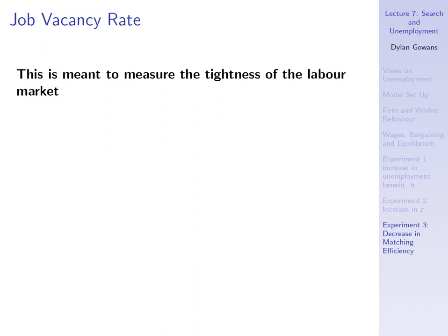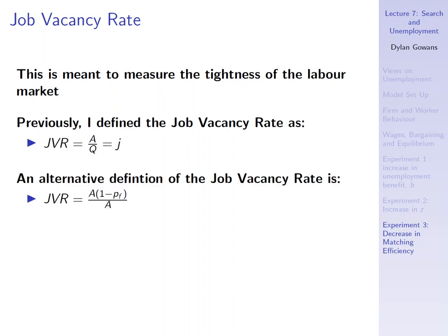And to do this, I'm just going to do a quick aside here and talk about the job vacancy rate. The job vacancy rate is meant to measure the tightness of the labor market. If there are a lot of vacancies, the labor market is tighter. And so I previously defined the job vacancy rate as the following, which is J, the number of available vacancies per searching worker. That's one definition.